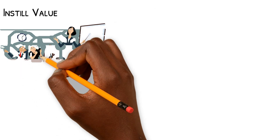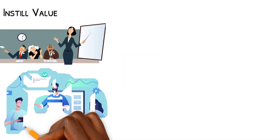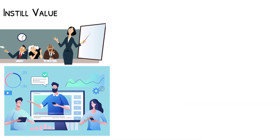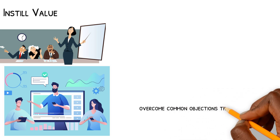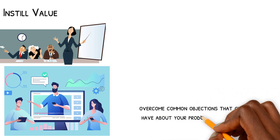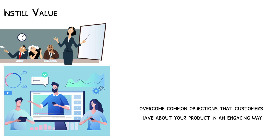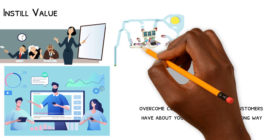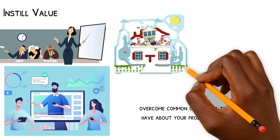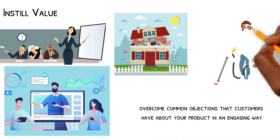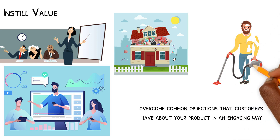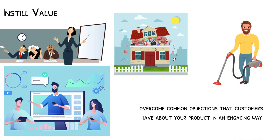Instill value. You don't want people to feel they're wasting their time learning about your product — it's best if you show them how it's used. One way to do this while writing a sales marketing script is to overcome common objections that customers have about your product in an engaging way. For instance, if customers feel your company's product takes up too much space in their home, show how easily it can fit into a basic closet. If customers doubt how long the product will last, showcase its durability. Sometimes you can overcome an objection visually without it becoming the main storyline of the script.